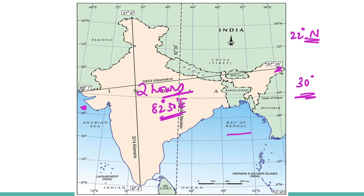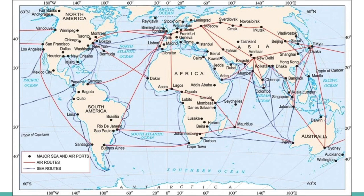The latitudinal extent influences the duration of day and night as one moves from south to north. The Indian landmass has a central location between East and West Asia. India is a southward extension of the Asian continent. The trans-Indian Ocean routes, which connect countries of Europe in the west and countries of East Asia, provide a strategic central location to India.